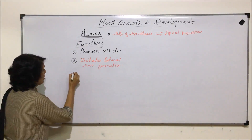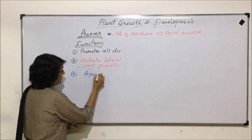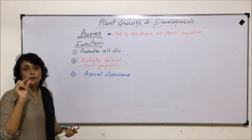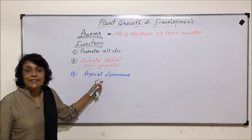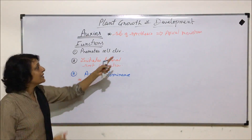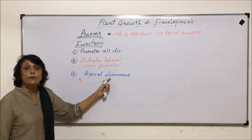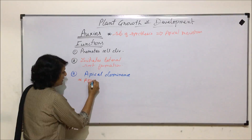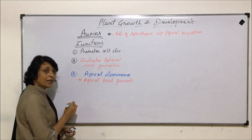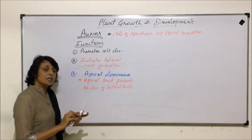The third function of auxins is apical dominance. Apical dominance means that as long as the tip of the stem or root is functional, it will not let the lateral buds grow. The apical bud at the terminal position prevents or inhibits the development of lateral buds.